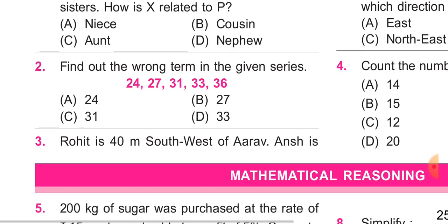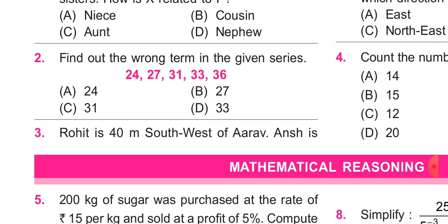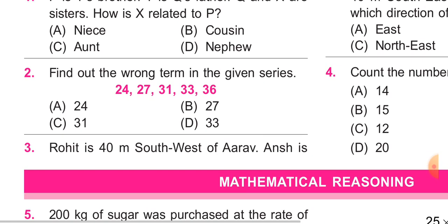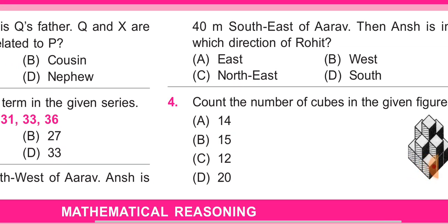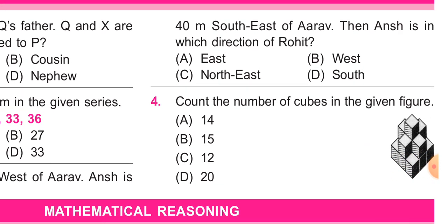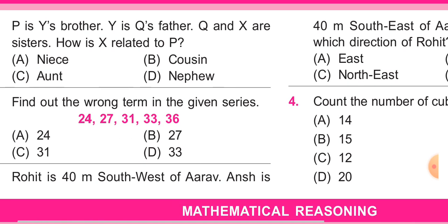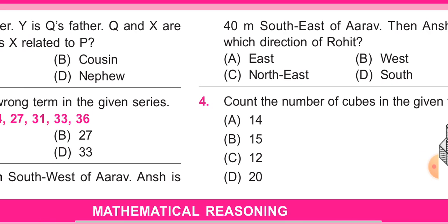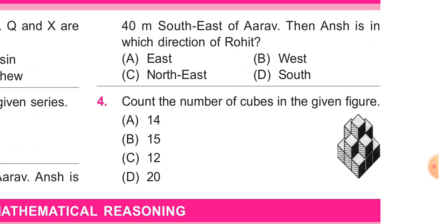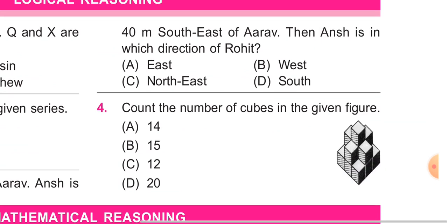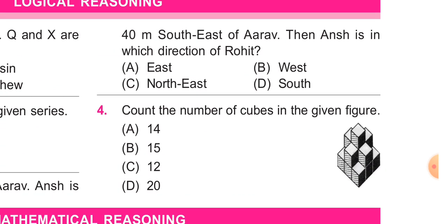Question number 3: Rohit is 40 meters southwest of Arav. Ansh is 40 meters southeast of Arav. Then Ansh is in which direction of Rohit? We have to make the 4 directions: East, West, North, South.